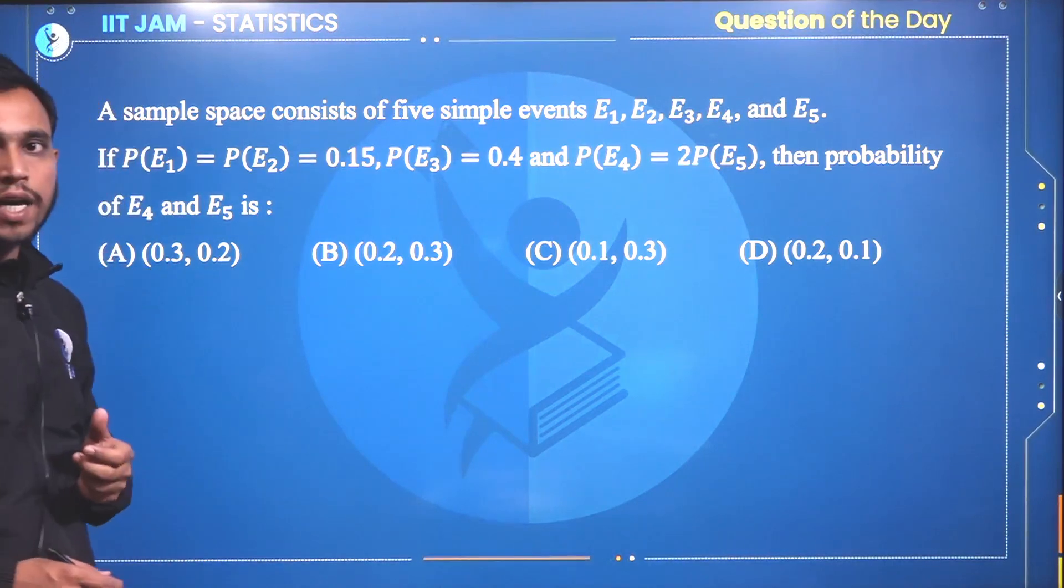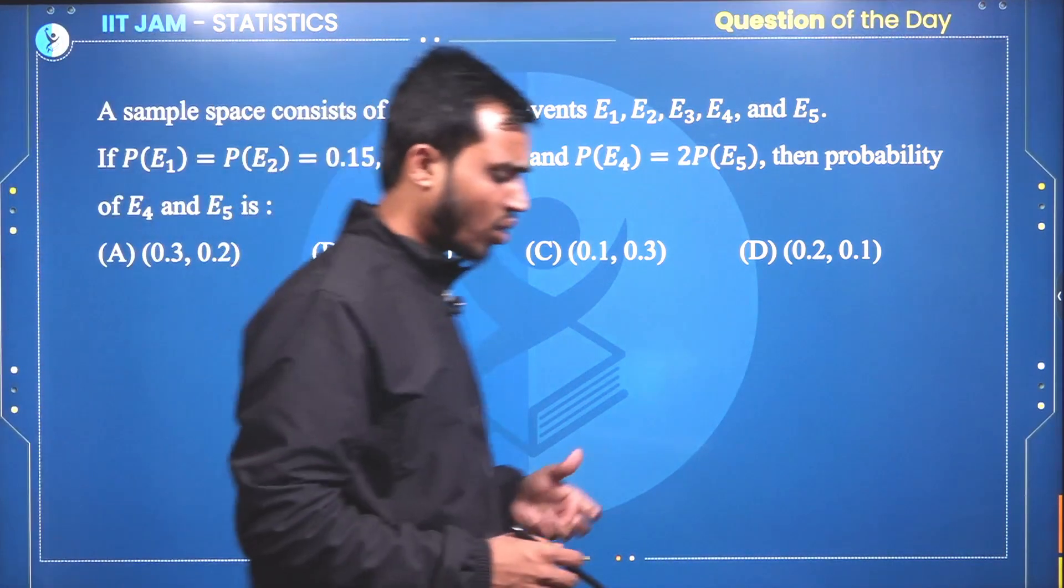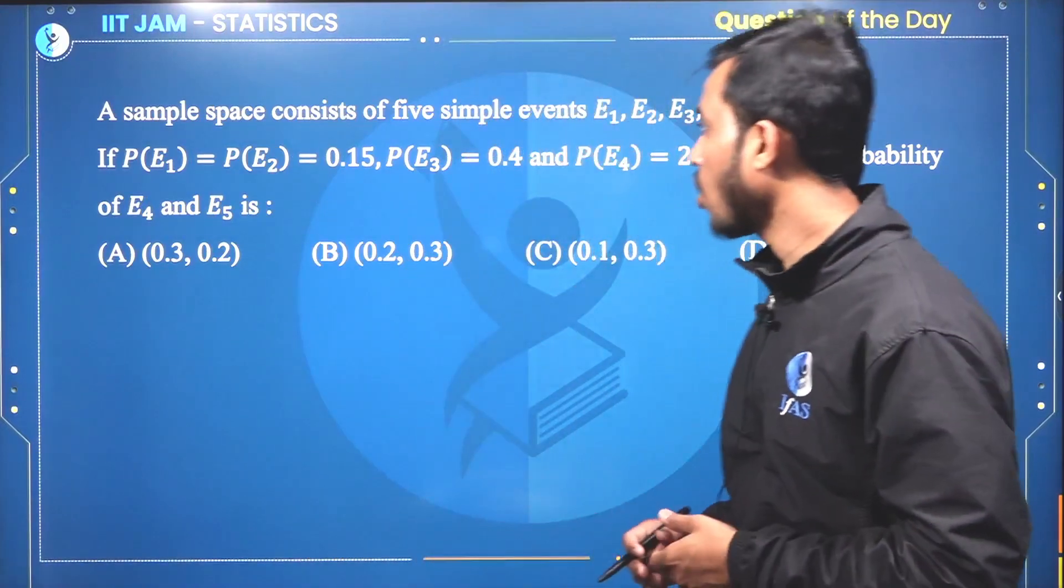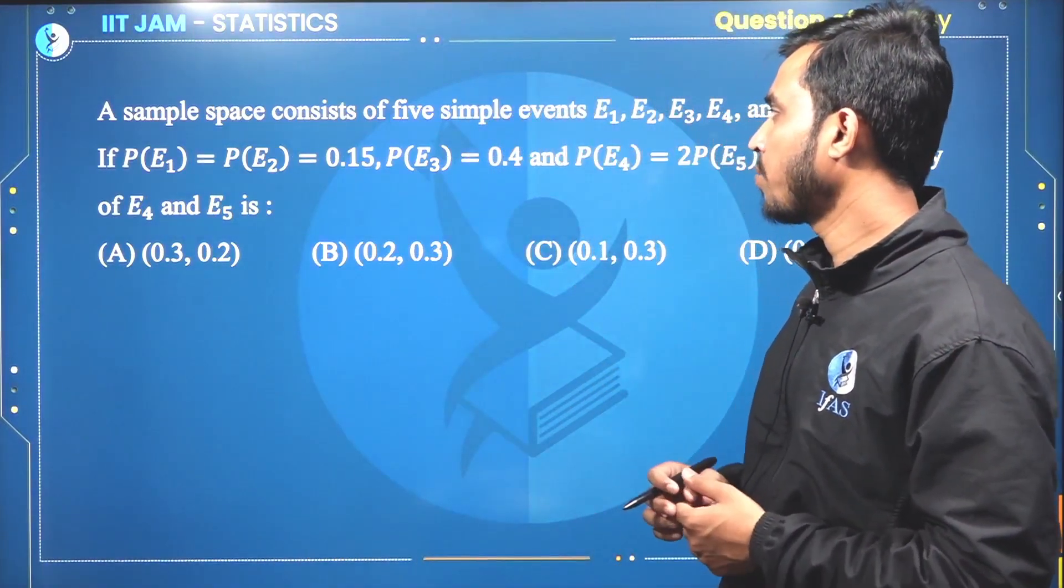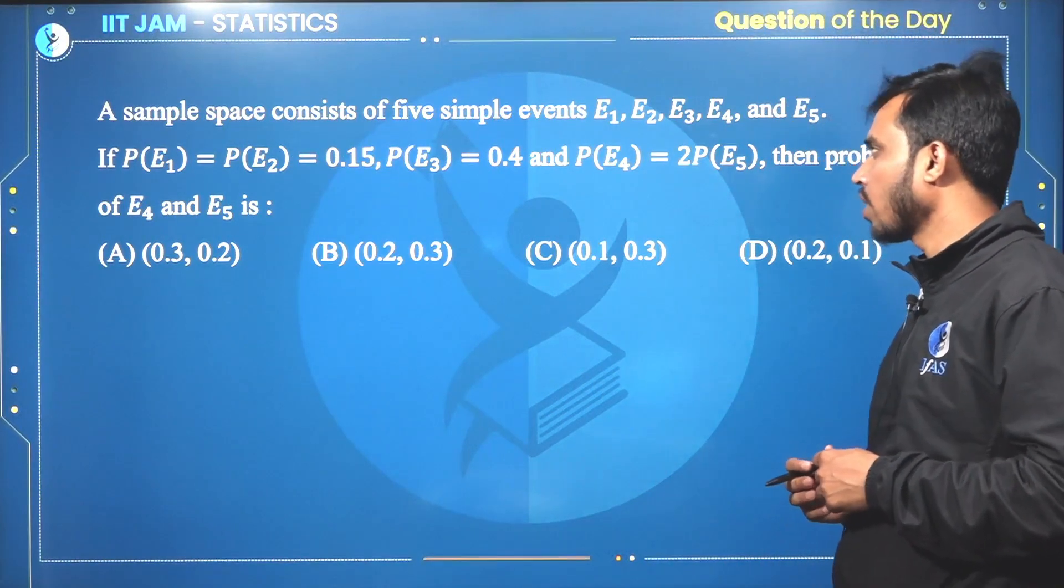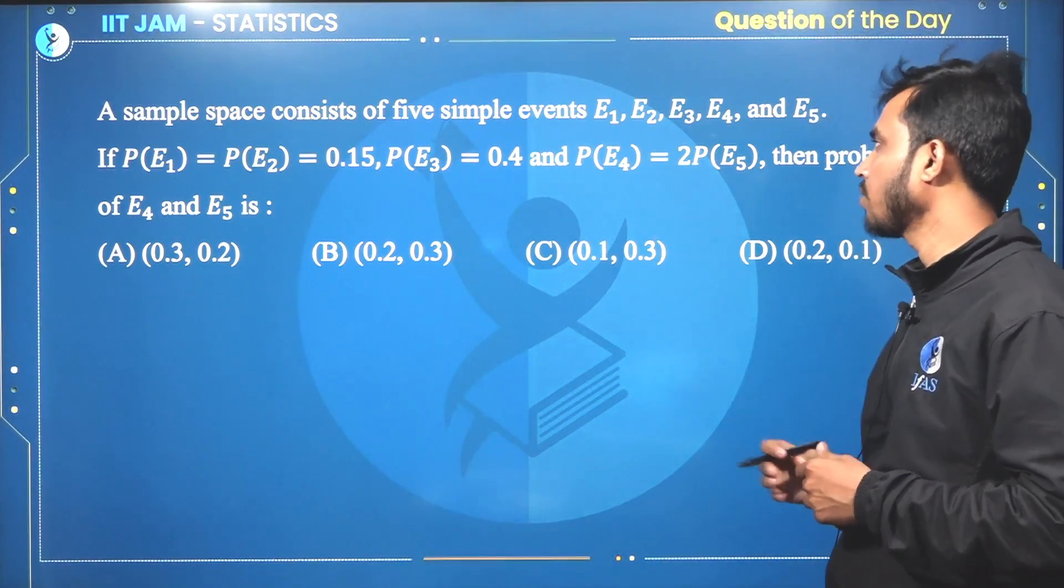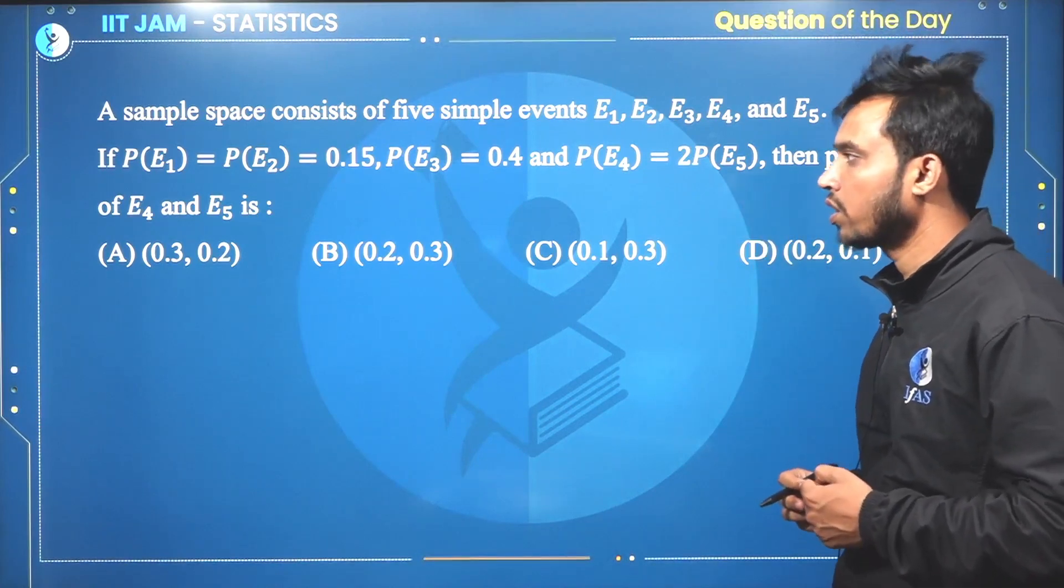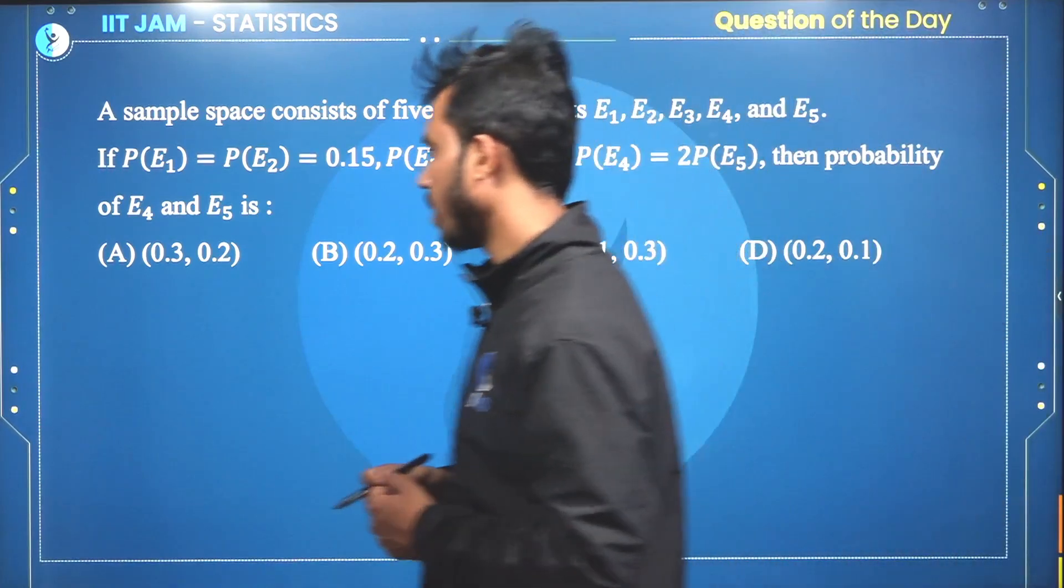The corresponding probabilities are given to you. That is, the probability of E1 equals the probability of E2, which is 0.15. The probability of E3 equals 0.4, and the probability of E4 equals two times the probability of E5. Then we have to find the probability of E4 and E5.